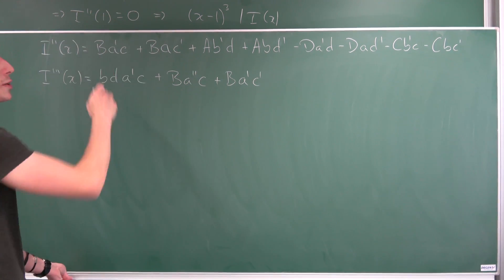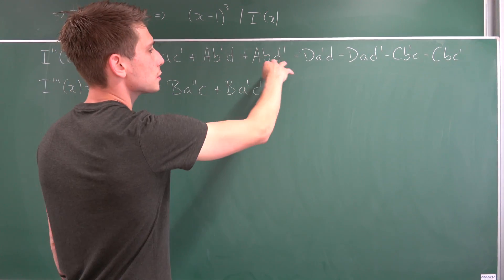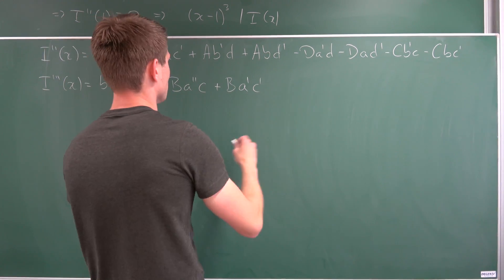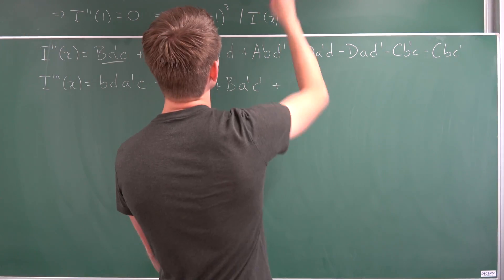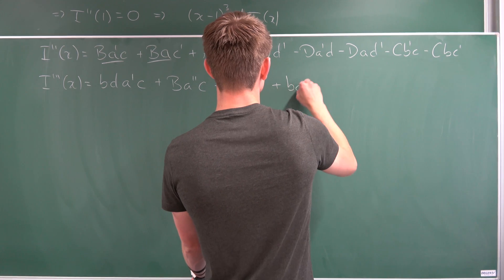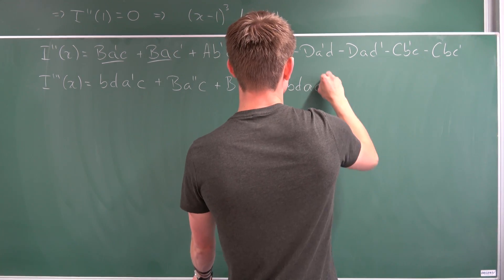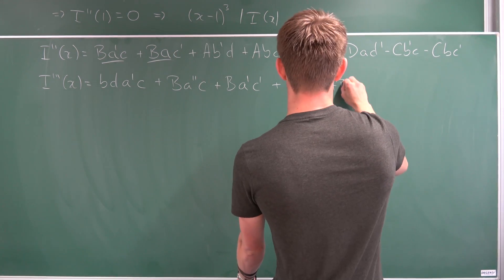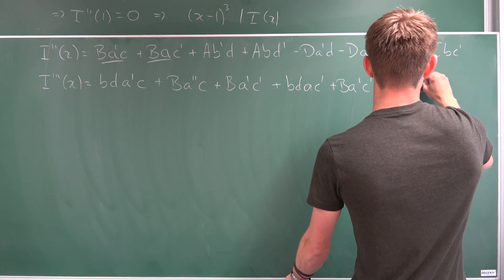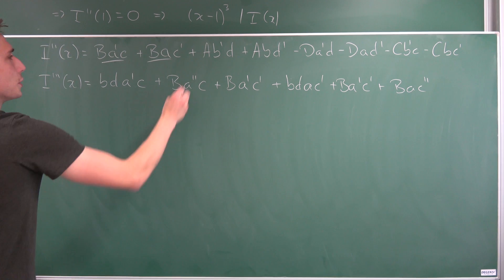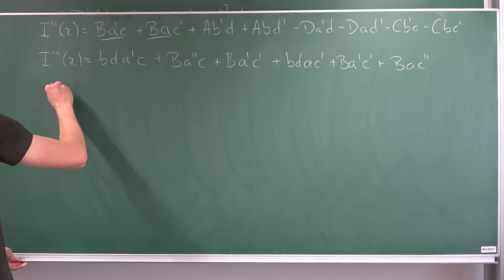So that was the first one, only two, seven more to go, never mind. So plus, this is done. B differentiated is once again B times D, B times D A C prime. Next one plus B A prime C prime plus B A C double prime. For the next one, so we have done that.